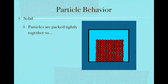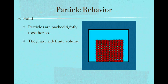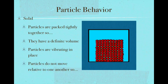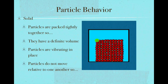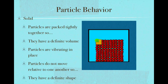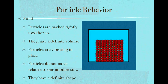Since these particles are packed tightly together and can't be pushed together or pulled apart, they have a definite volume. You can see the particles are vibrating in place but they don't move around one another — the particles do not move relative to one another. The particle in the top left-hand corner stays where it is; the nearby particles stay in the same position relative to one another. Because of that, solids have a definite shape.